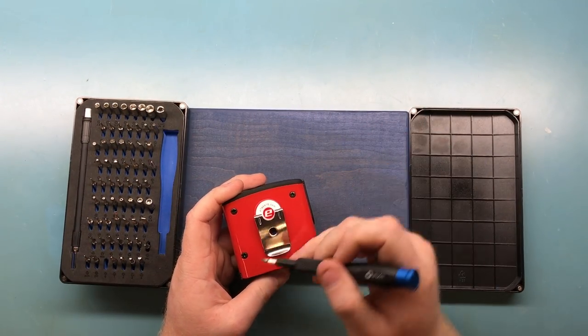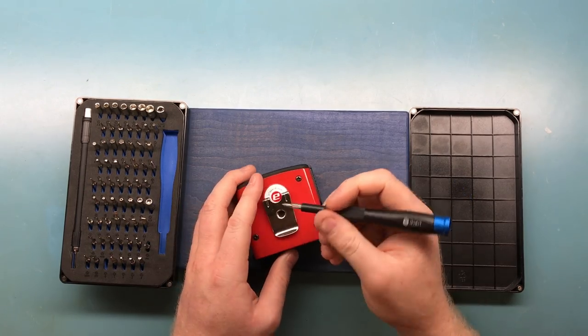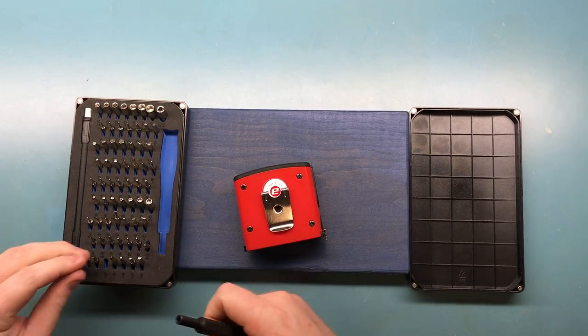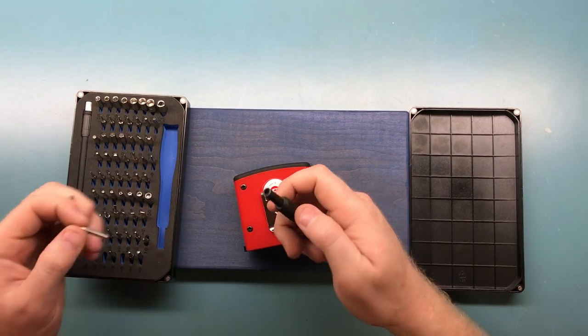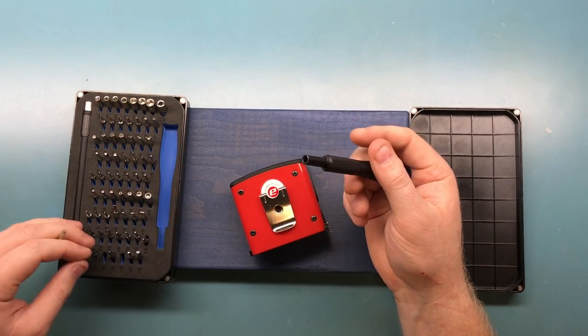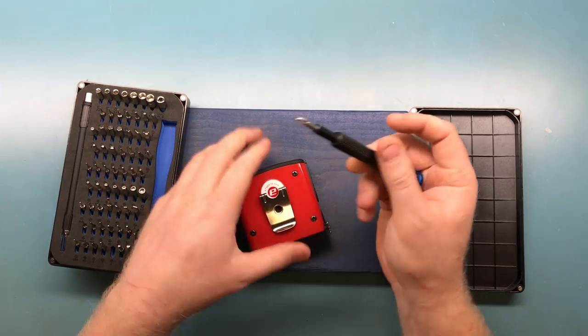Okay, right off the bat it has those, I don't know what they're called, but basically it looks like a Phillips but the tip is rounded off. So if you try to use a regular Phillips it just kind of skips on you. It's like a security screw.